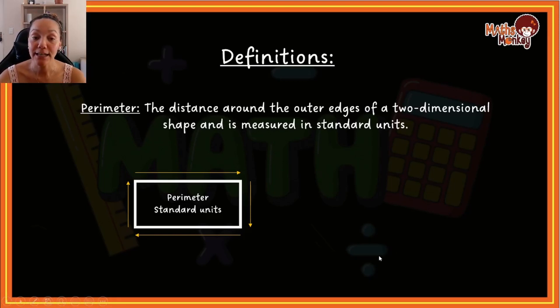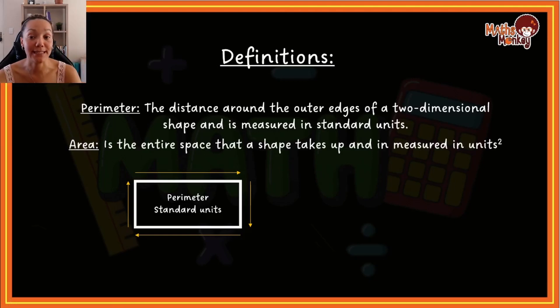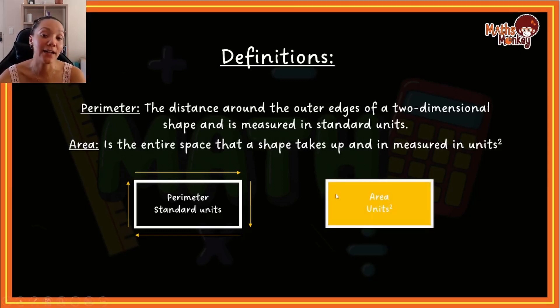The second section we're looking at is area. Area is the entire space that the shape takes up, the inside of the shape essentially, and is measured in units squared. If I have a rectangle, area is the entire space. If the measures are in centimeters, then your answer will be in centimeters squared. If the lengths are given in meters, then your answer is going to be meters squared.